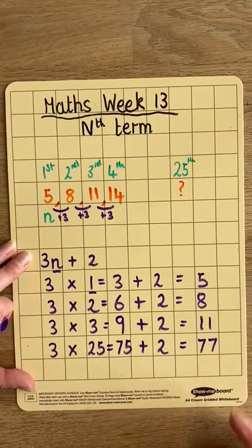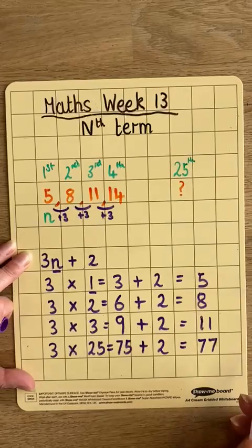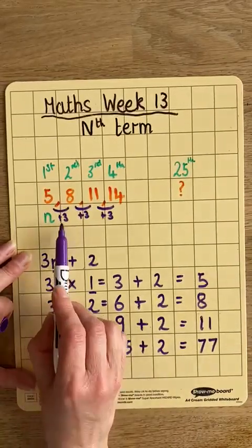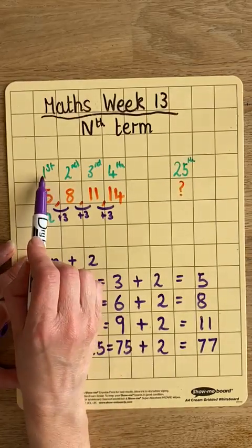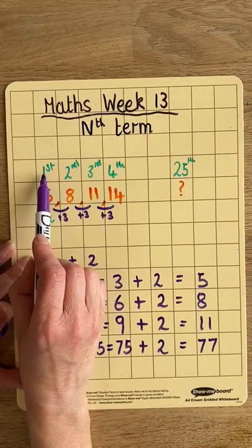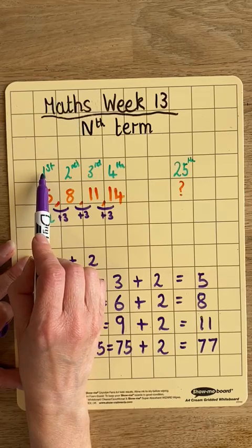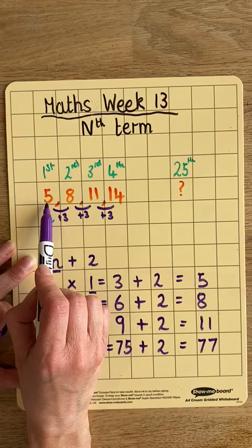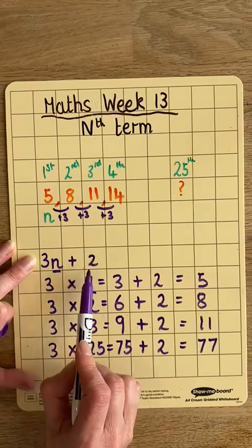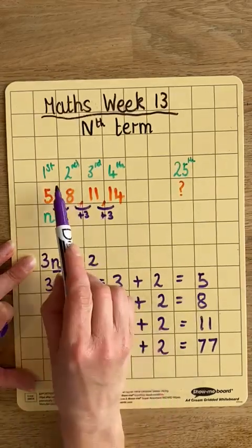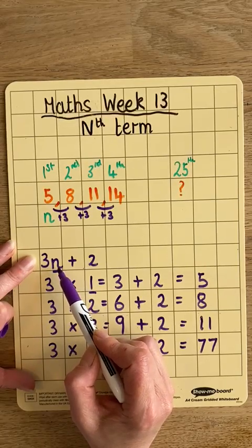To find that, I needed to, first of all, find the difference between the numbers in my sequence, which gave me 3n, because it was plus 3 every time. Then, I tried 3n with the first number in my sequence, so 3 times 1, n standing for the term in the sequence. And to get to the first term, the value, I had to add 2. So that gave me the formula 3n plus 2, which, once I substitute n for the number in the sequence, gives me the value for any number in that sequence.